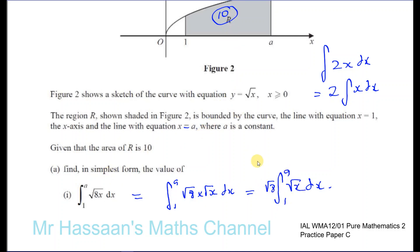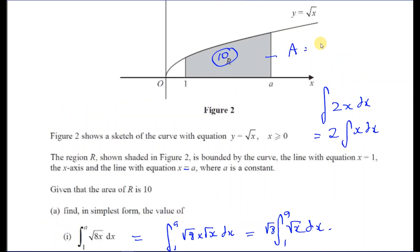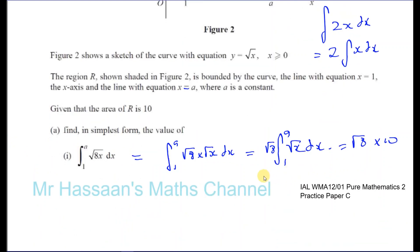The area is equal to 10, and it's equal to the integral between 1 and A of the square root of x dx, which is exactly this. So this is basically the square root of 8 times 10. That's 10 times the square root of 8, which is not in simplest form — root 8 is root 4 times root 2, so you end up with 2 times 10, giving 20 times root 2 as the answer.